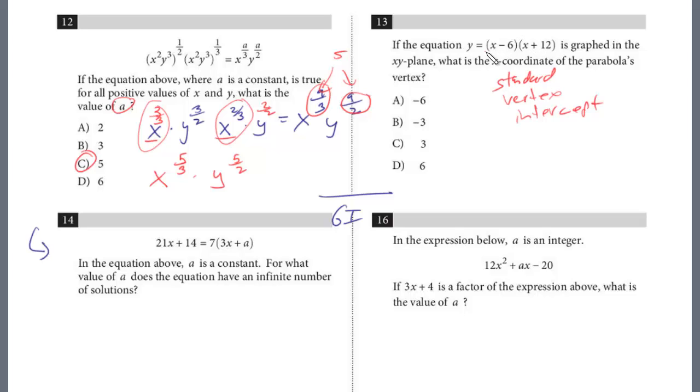So this is intercept form. We know if these are the factors, that the solutions are going to be 6 and negative 12. The easiest way to get the vertex is remember this is a parabola, an upward opening parabola. And these are the two points where it intersects the x-intercept. But the axis of symmetry is right in the middle. And you could see that these are 18 apart. So 18 apart, what's half of 18? It's 9. So it's going to be 9 this way or 9 this way. In either case, you're going to get negative 3.